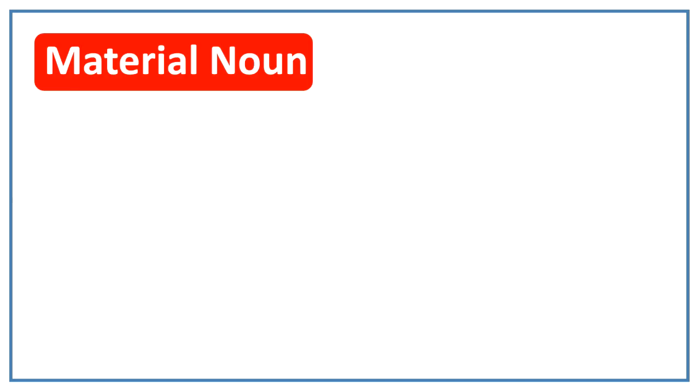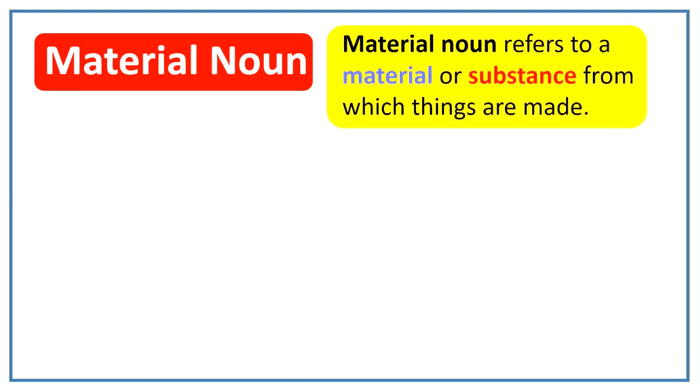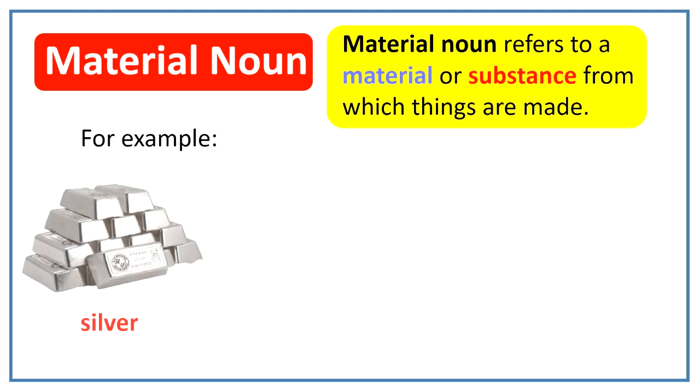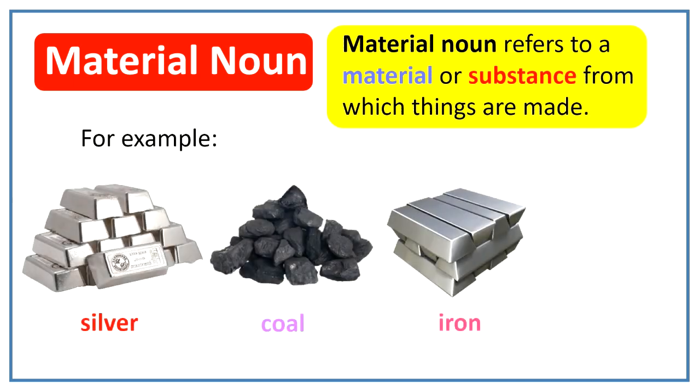What is a material noun? Material noun refers to a material or substance from which things are made. For example, silver, coal, iron and gold.